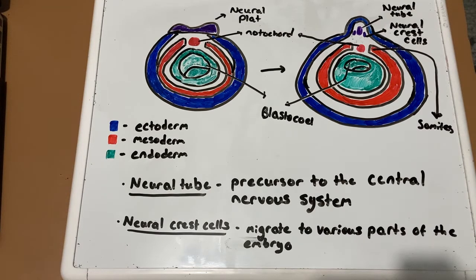On top of that, you have neural crest cells which migrate to various parts of the embryo. Because of this migration, they form peripheral nerves, certain parts of teeth, skull bones, and many other cell types.